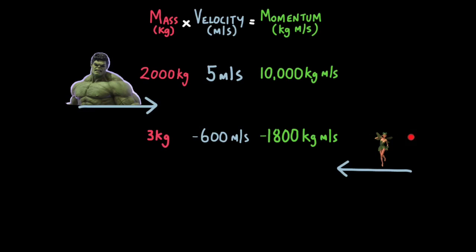Now let's take a pixie. Our pixie has a much lower mass, 3 kilograms and they're moving in the opposite direction so they have a velocity of minus 600 meters per second. We'll assume it's a very fast pixie. So you multiply the two together and you have minus 1,800 kilogram meters per second. Remember minus because it's moving in the opposite direction.